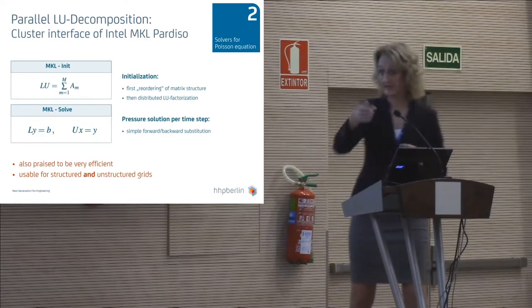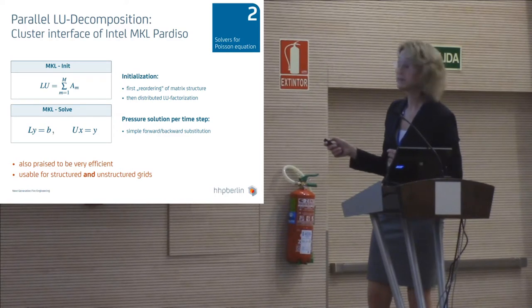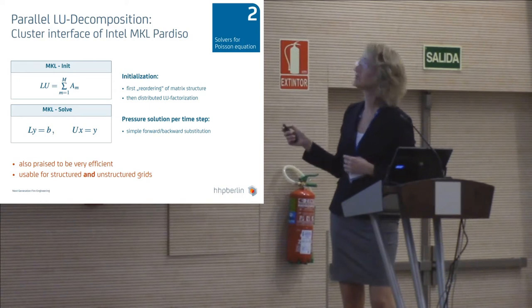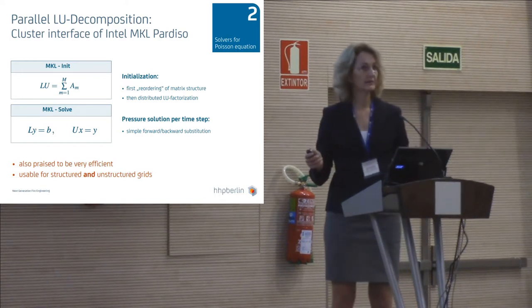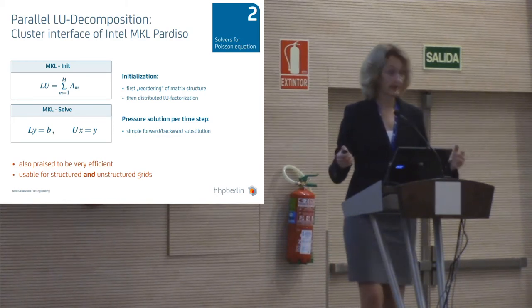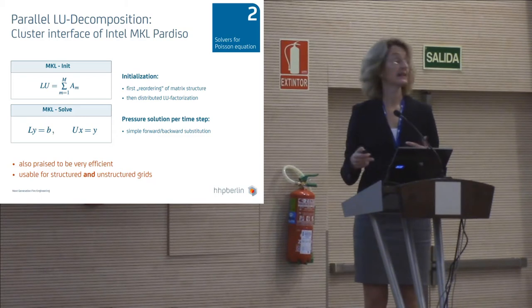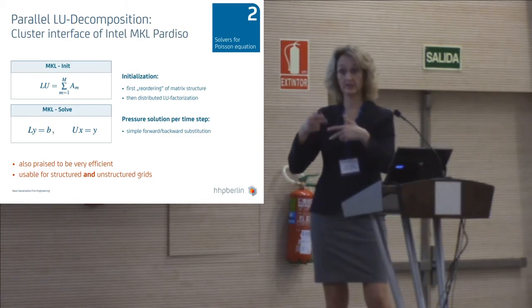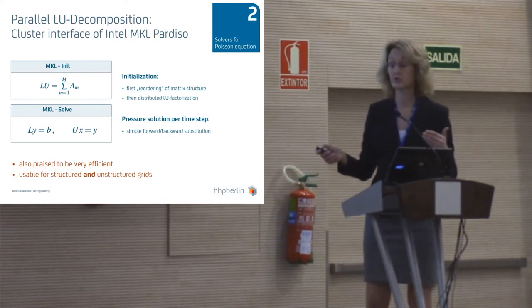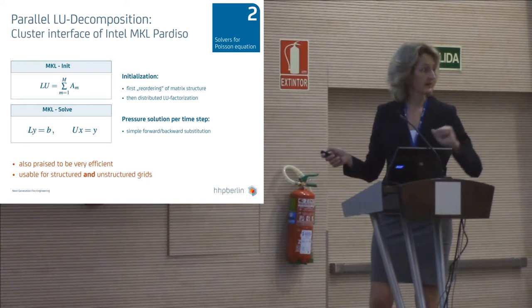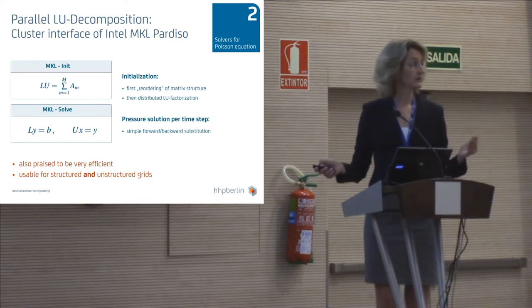The next solver, also mentioned yesterday in Marcos's talk, is a parallel LU decomposition. This is a black-box solver from the Intel Math Kernel Library named Paradiso, which means parallel direct solver. It is based on a global LU decomposition of the whole matrix — a factorization into a lower and an upper triangular matrix. Usually this must only be done once in the beginning, as long as your meshes don't move or change. In each single time step, the solution of the pressure equation consists only of a simple forward and backward solve. This method is praised to be very efficient and also works for unstructured grids.